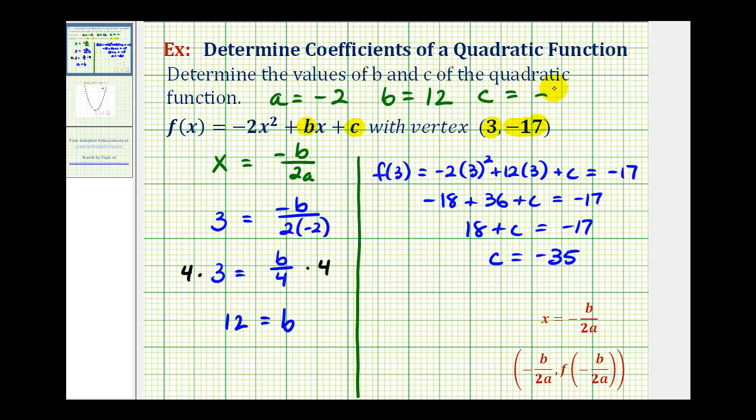So if c is equal to negative thirty-five, we now know our quadratic function. It is f of x equals negative two x squared plus twelve x minus thirty-five. I hope you found this explanation helpful.